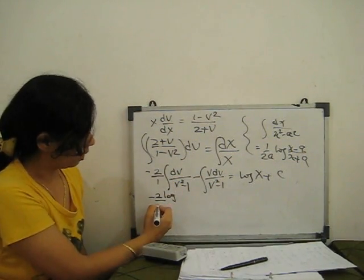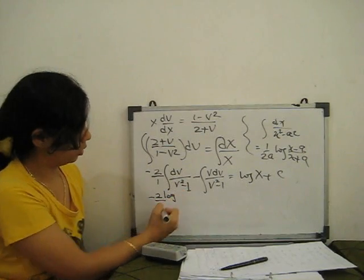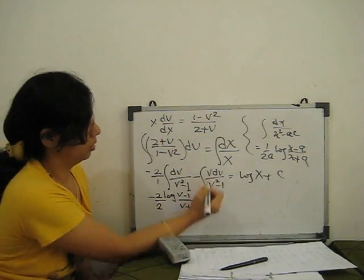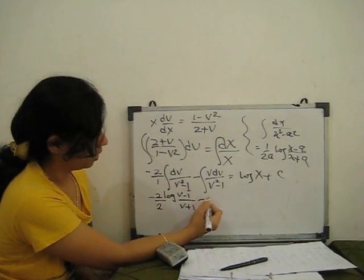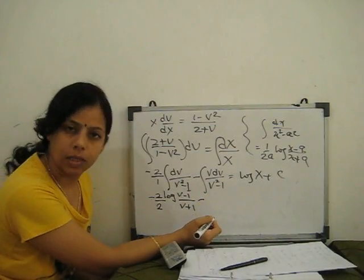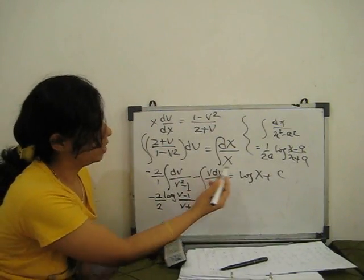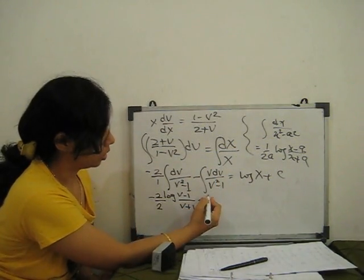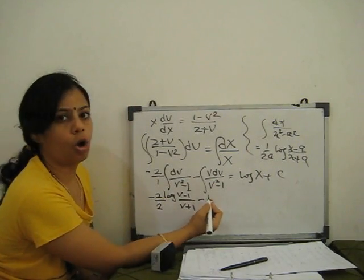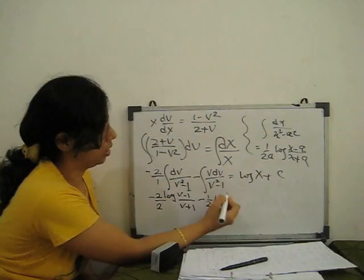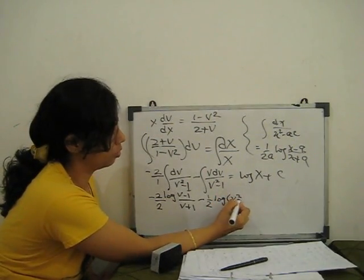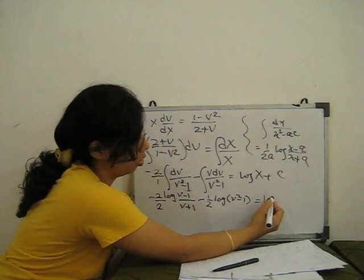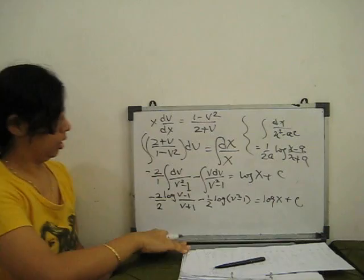Applying the formula with a = 1: −2 · (1/(2·1)) · log|(v − 1)/(v + 1)|. For the second integral, substitute t = v² − 1, so 2v·dv = dt, meaning v·dv = dt/2. Then ∫ v·dv/(v² − 1) = (1/2)∫ dt/t = (1/2) log|t| = (1/2) log|v² − 1|. Combined: log|(v − 1)/(v + 1)| and (1/2) log|v² − 1| = log|X| + C.